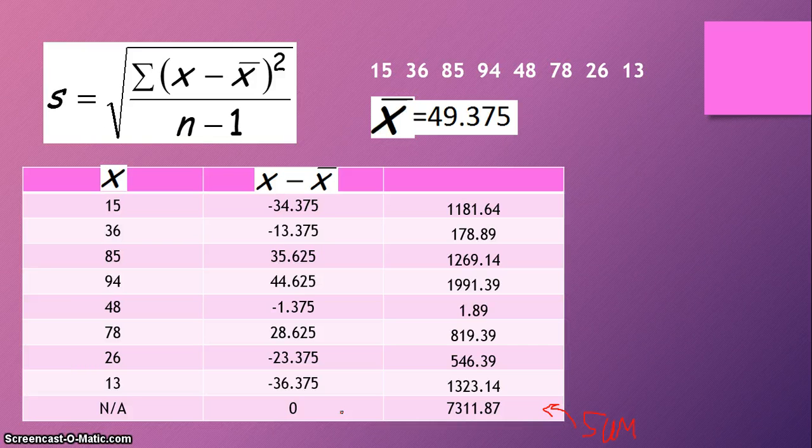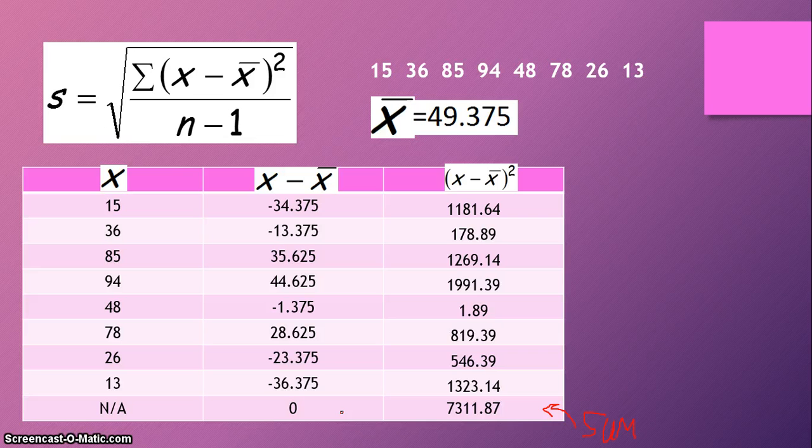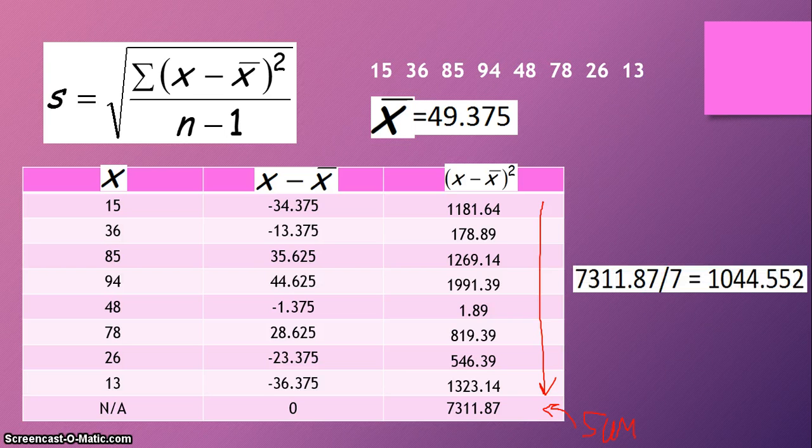But since when we add all of our deviations together, which is our differences from the mean, when we add all our deviations together, it equals zero. So we're good. And then we square our deviations, simply so that we can get rid of the negative sign. So we add all of our deviations, so we add up all the numbers in this column, and we get 7,311.87. And of course, once we get that sum, we divide it by n minus 1.